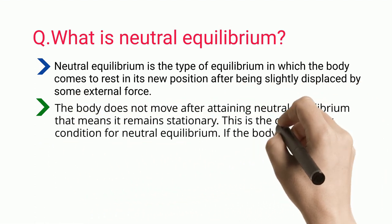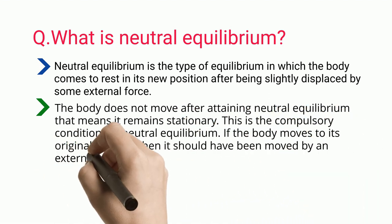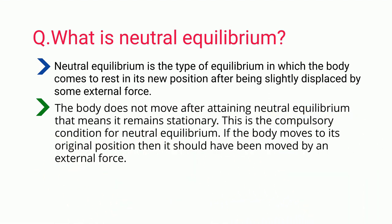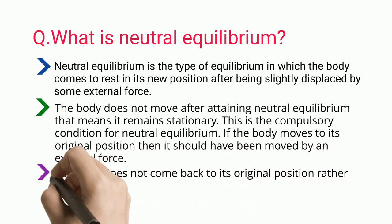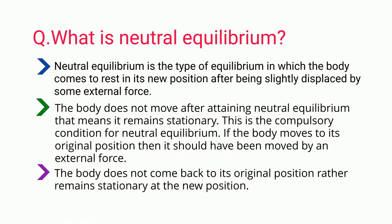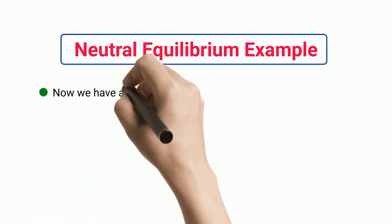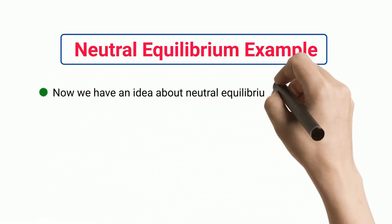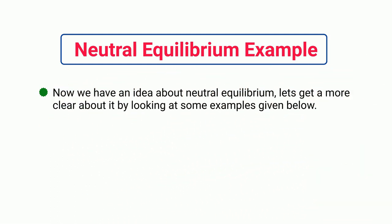This is the compulsory condition for neutral equilibrium. The body does not come back to its original position; rather, it remains stationary at the new position. Now that we have an idea about neutral equilibrium, let's get a clearer picture by looking at some examples.